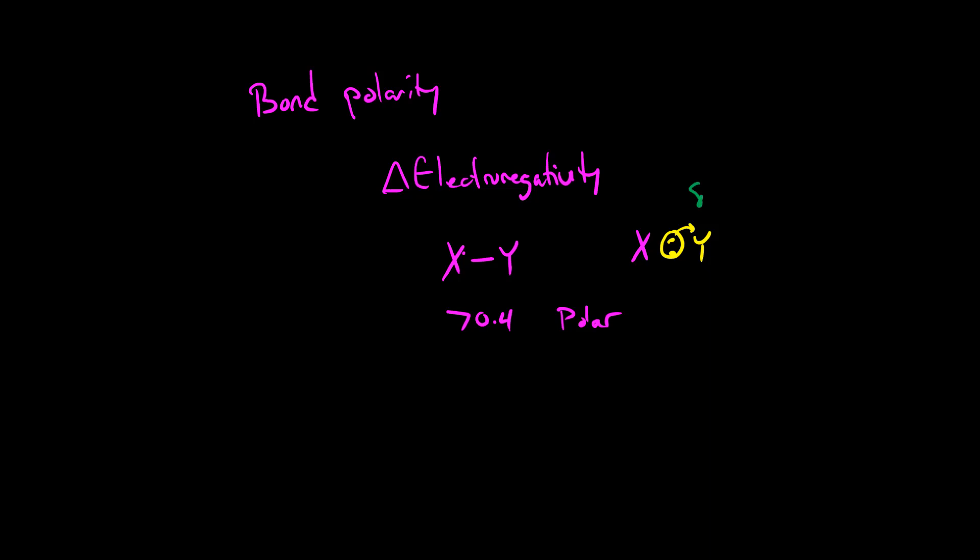And that creates a partial charge on that atom. So atom Y in this case would be partially negative. This little delta symbol. So that means partial negative. And X, because the electrons have been pulled away from it, is now partially positive.